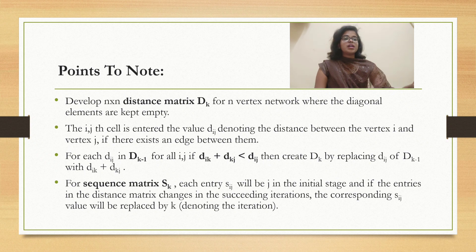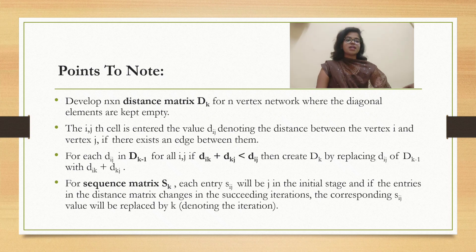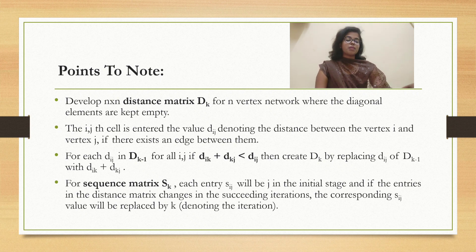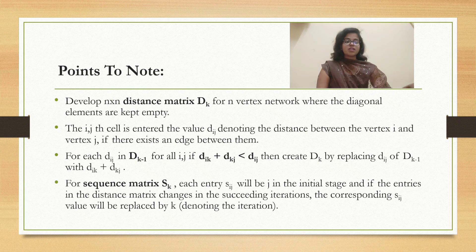Moving on to the steps: develop an n by n distance matrix D_k for an n-vertex network where the diagonal elements are kept empty. The i,j cell is entered with the value d_ij denoting the distance between vertex i and vertex j if there exists an edge between them. For each d_ij in D_{k-1}, for all i,j, if d_ik plus d_kj is less than d_ij, then create D_k by replacing d_ij of D_{k-1} with d_ik plus d_kj. For the sequence matrix S_k, each entry s_ij will be j in the initial stage, and if the entries in the distance matrix change in succeeding iterations, the corresponding s_ij value will be replaced by k, which denotes the iteration.